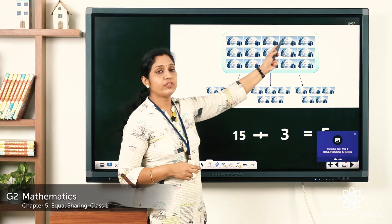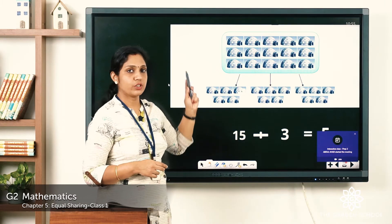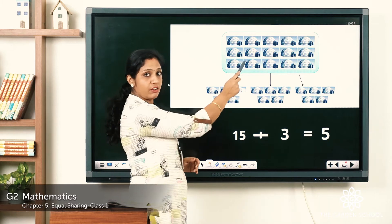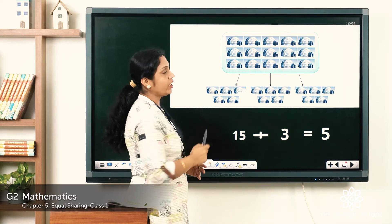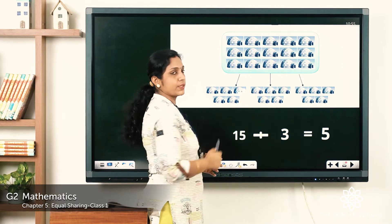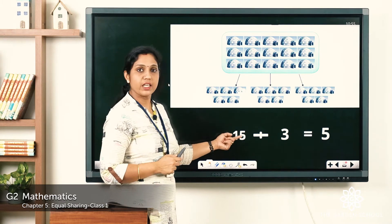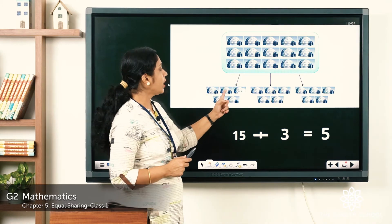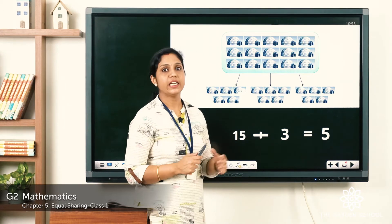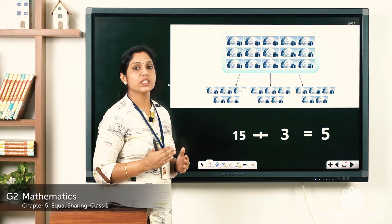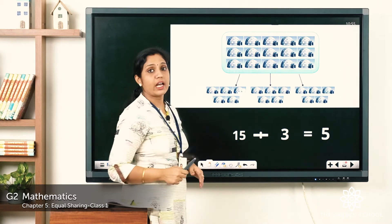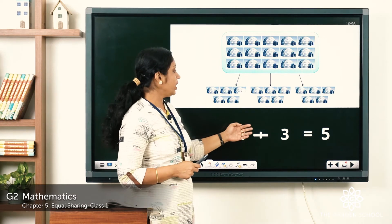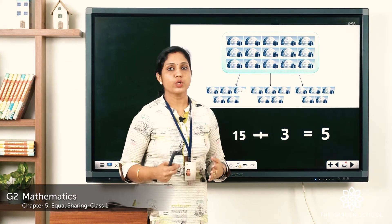Here are some igloos. There are 15 igloos in total, and they are divided into 3 equal groups. So the dividend is 15, and the divisor is 3. Counting in each group: 1, 2, 3, 4, 5 — there are 5 igloos in each group. So the answer is: 15 divided by 3 is equal to 5. The quotient is 5.